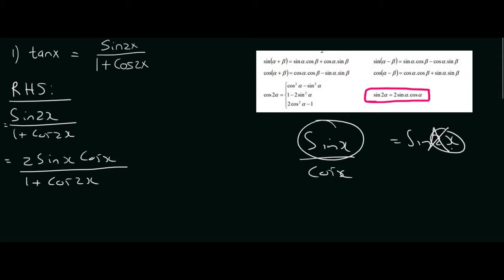Now cos 2x is the more interesting one because it can become three different options. We can see over here it's got three different possibilities. So a technique that I always tell students to use is to try and eliminate the 1.